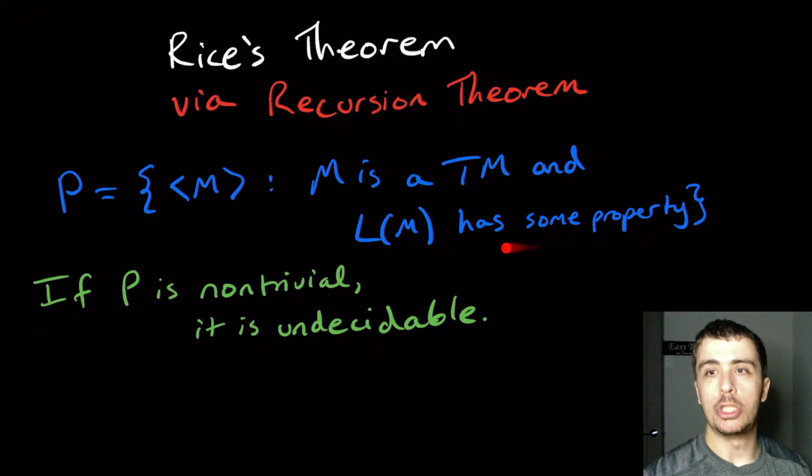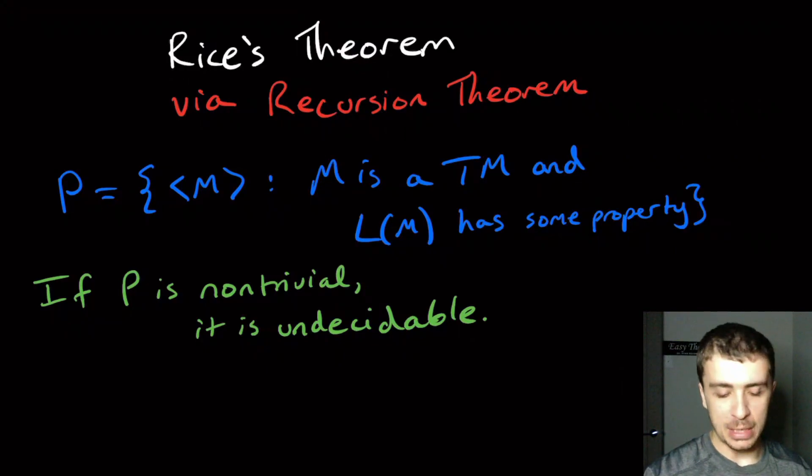The language could be empty, it could be Sigma star, it could be infinite, it could be finite, it could be regular, it could be context-free, some property about the language of the Turing machine.